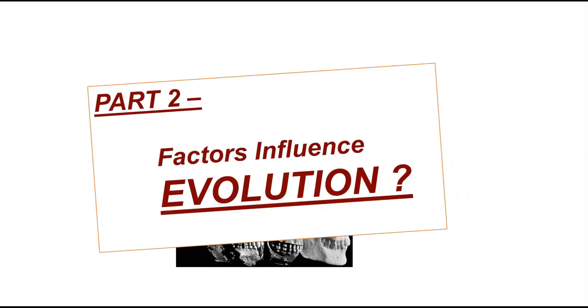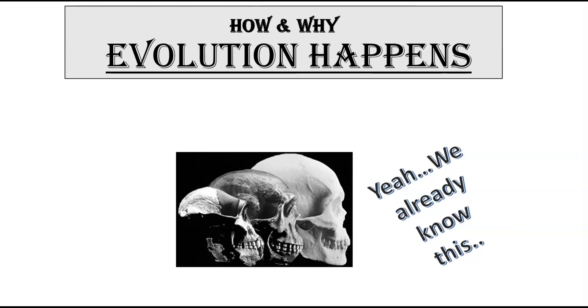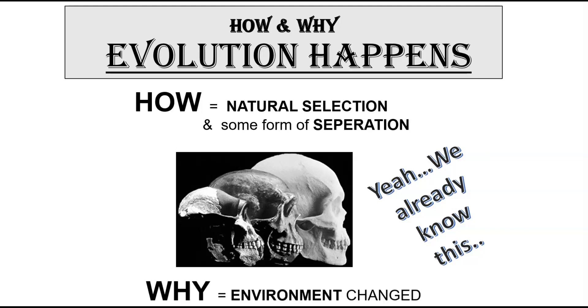Factors that influence evolution - what does that mean? It means the how and the why that evolution occurs. We already know this, but how evolution happens is through the process called natural selection. Why evolution happens is because the environment has changed and the species now need to catch up.